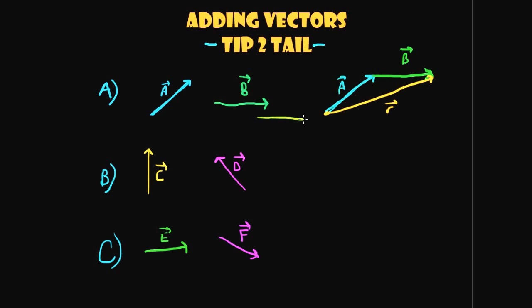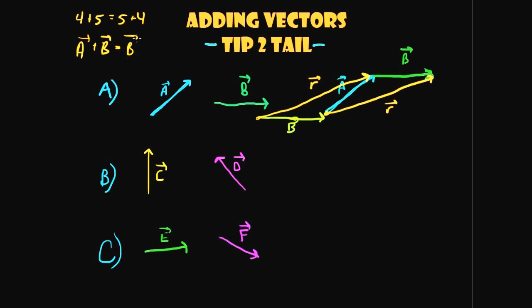What if we added vector B on the other side? It's still tip-to-tail. You'll notice when you draw the resultant vector carefully — on graph paper, for instance — the two resultant vectors are absolutely identical. That tells us vector addition is commutative: just as 4 plus 5 equals 5 plus 4 in arithmetic, vector A plus vector B equals vector B plus vector A.